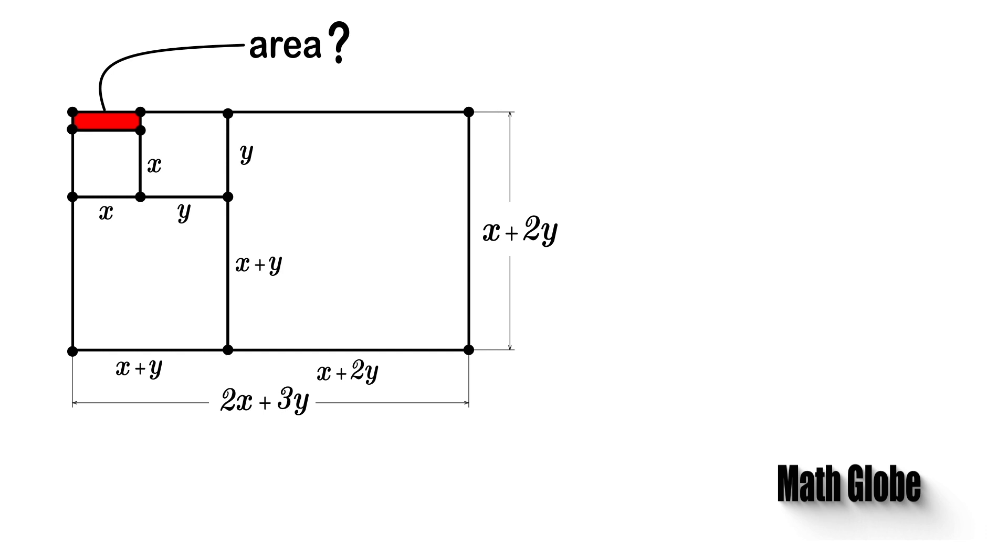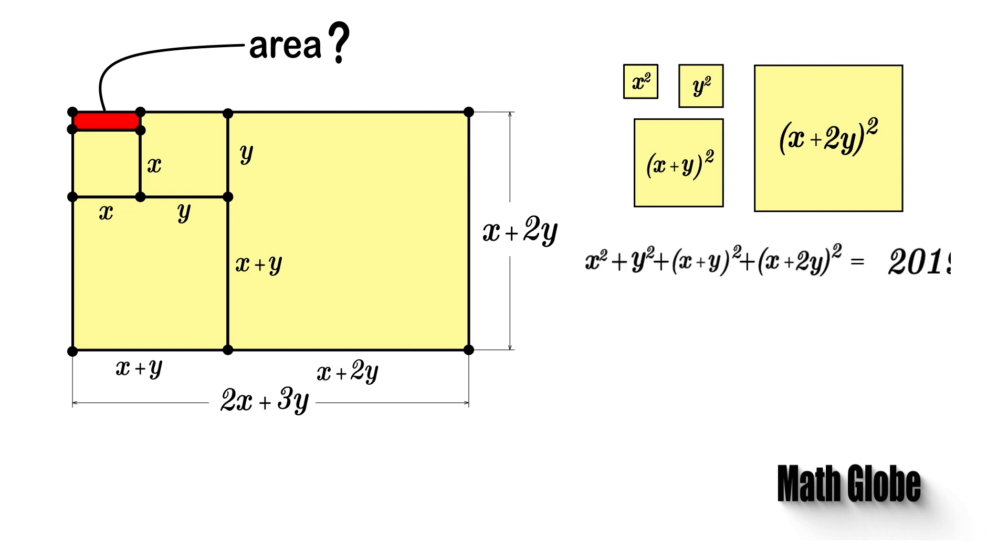Well, right after having completed naming all the sides, then let's move on and write the area equations for each square up here. Next, we add the area equations up which is equal to the total area 2019.